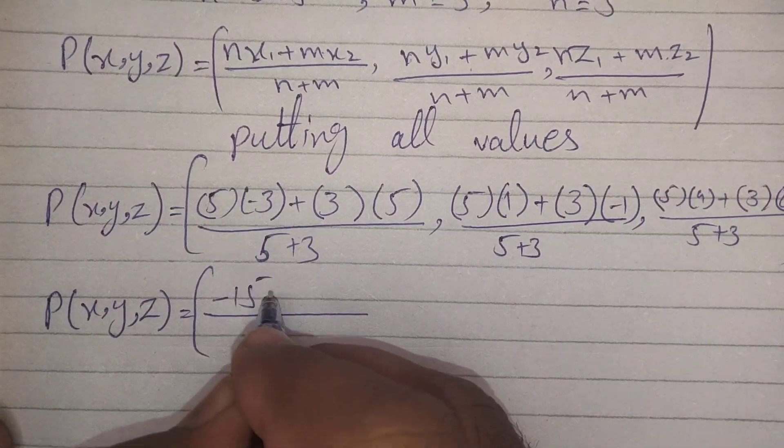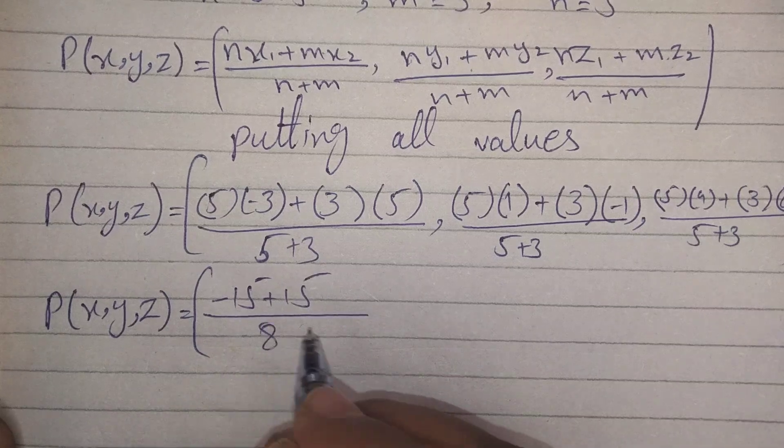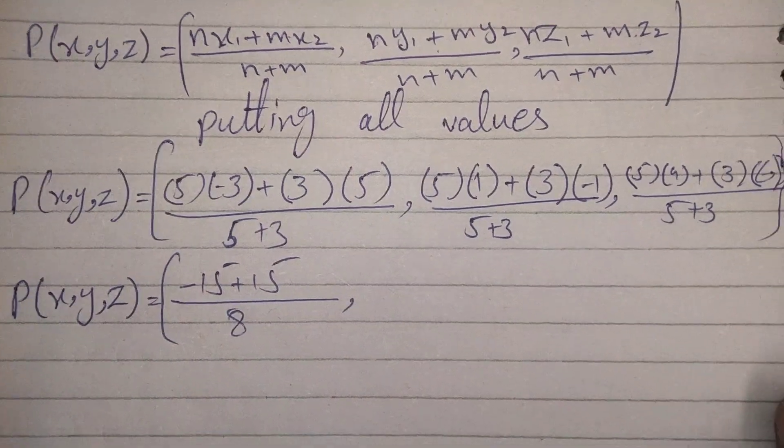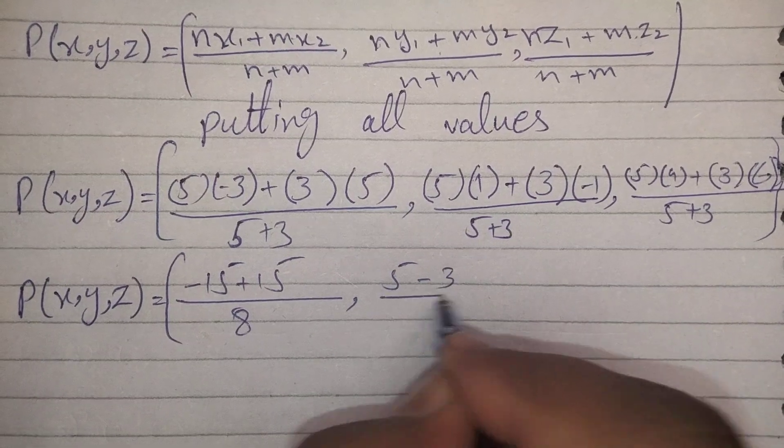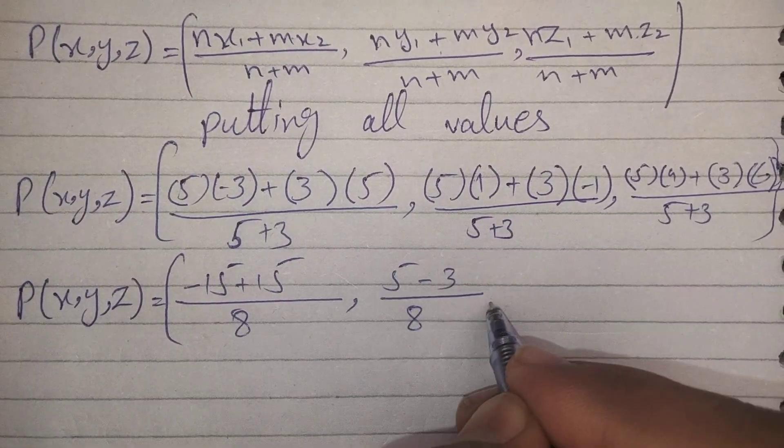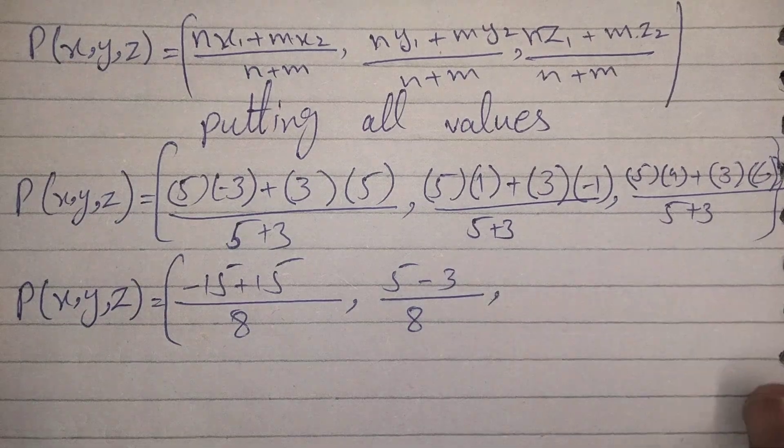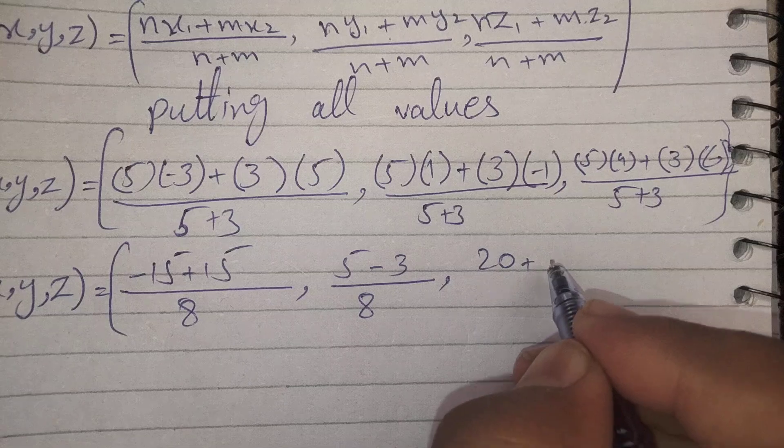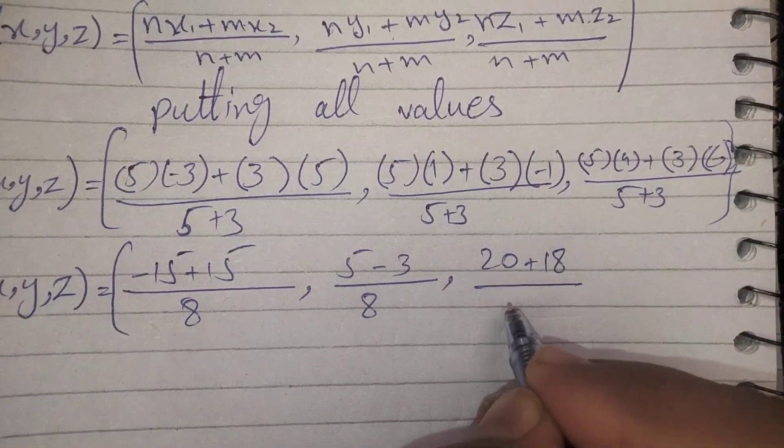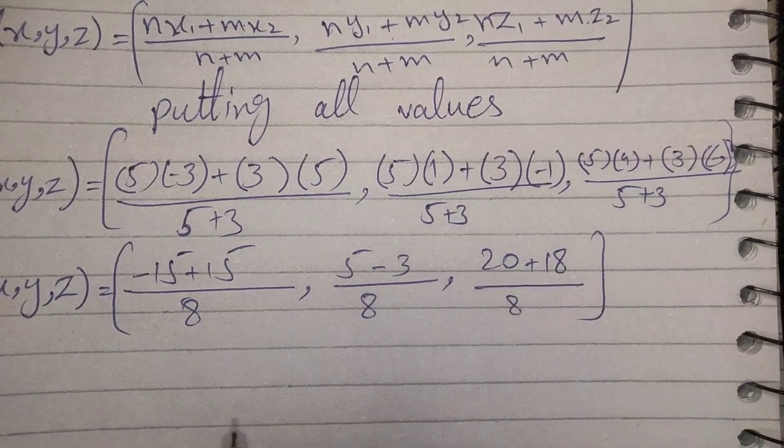This gives us: (-15 + 15) over 8, (5 - 3) over 8, and (20 + 18) over 8.